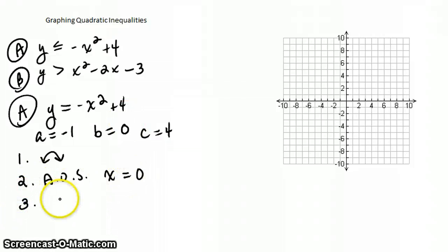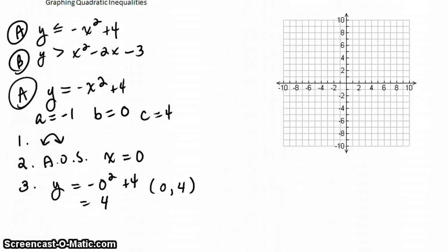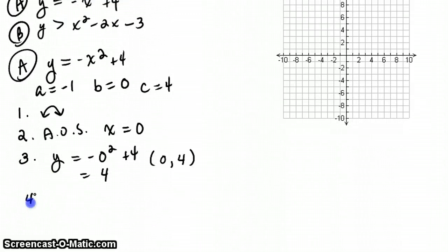And our vertex. Okay, if we plug in zero for x, we have negative zero squared plus four. This is just four. So our y, our vertex, which is actually just our y-intercept as well, is the point zero four. Our y-intercept is always going to be zero c. So in this case, it is zero four.